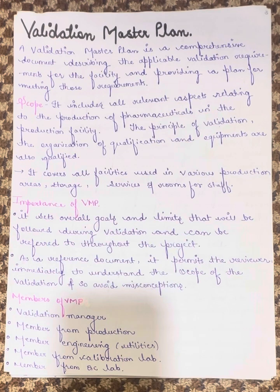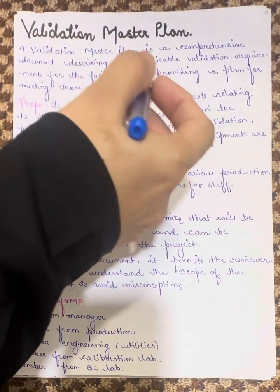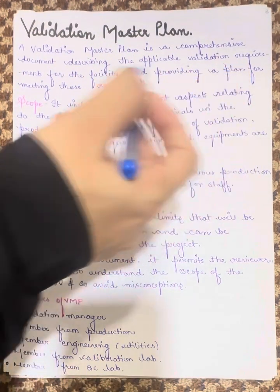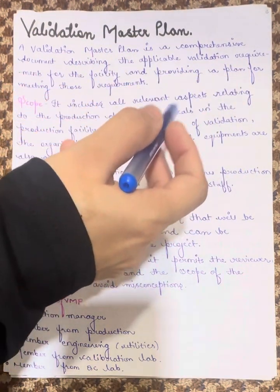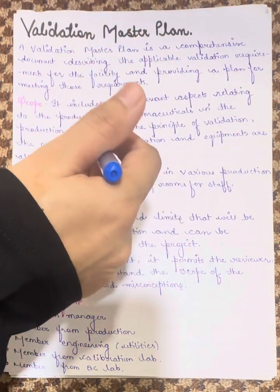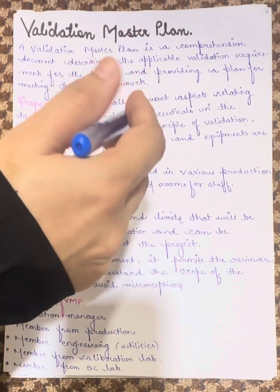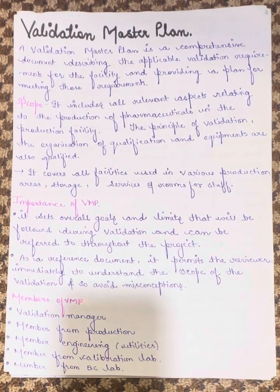Its scope is that it includes all the relevant aspects relating to the production of pharmaceuticals in the production facility. All aspects of pharmaceuticals which we need to include are covered in the production facility.